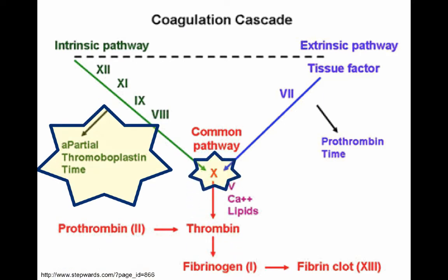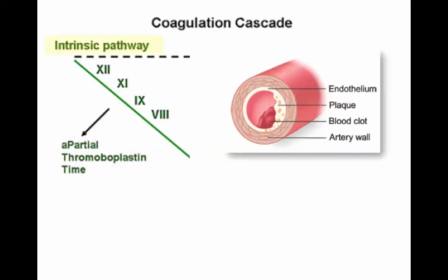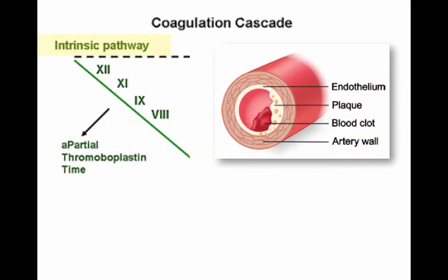Why are we switching from PTT to factor Xa? Let's quickly look at the coagulation cascade. With the intrinsic pathway, that's activated when there's damage to the endothelium — that can be from a DVT, PE, acute coronary syndrome, or sometimes infection as well.